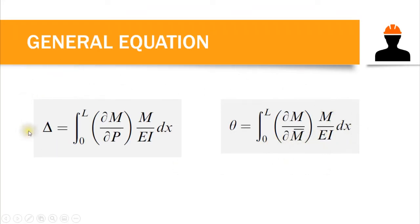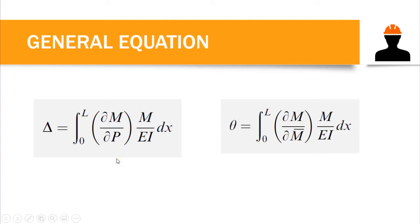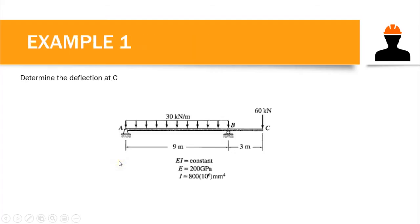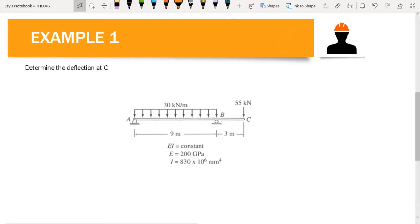This is essentially the same as the virtual work system; the key difference is that we differentiate the moment equation, since it is expressed in terms of the variable P. We need to eliminate P by differentiating with respect to P itself. Let's solve a problem to further understand Castigliano's Second Theorem. In example one, we have an overhang beam with a 30 kN/m uniformly distributed load from A to B, and a 55 kN load acting at point C.